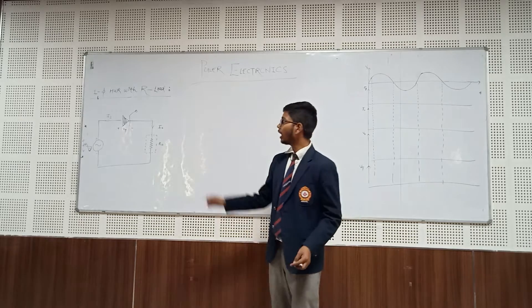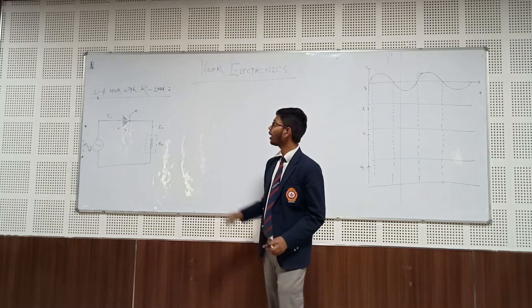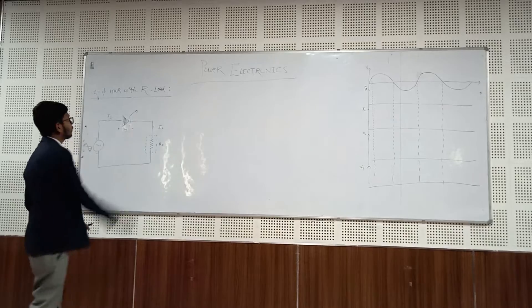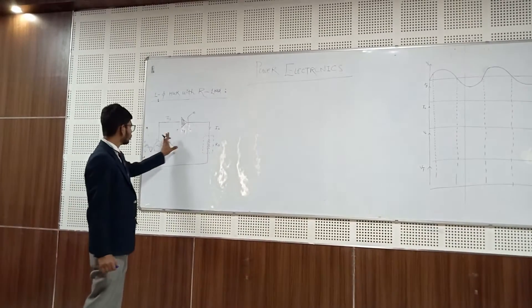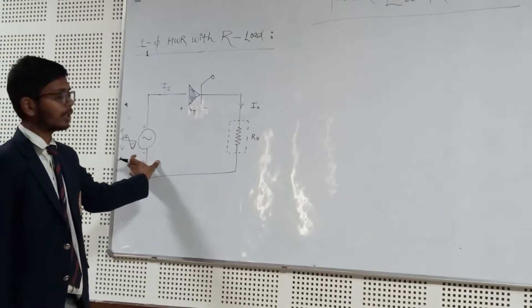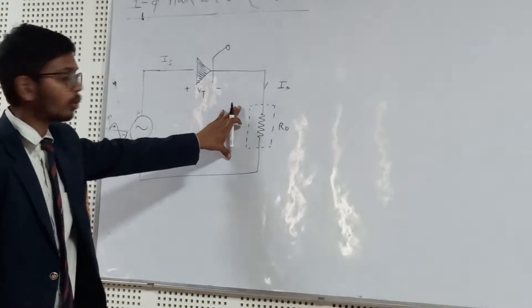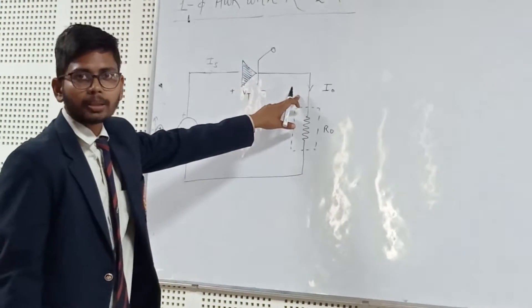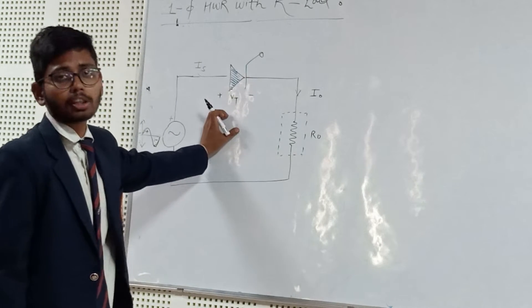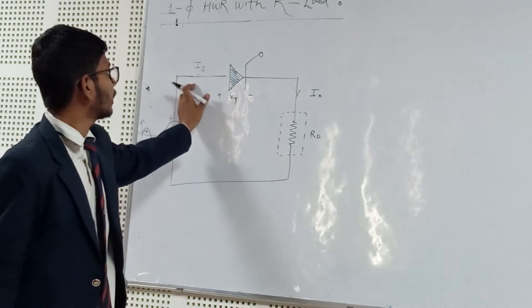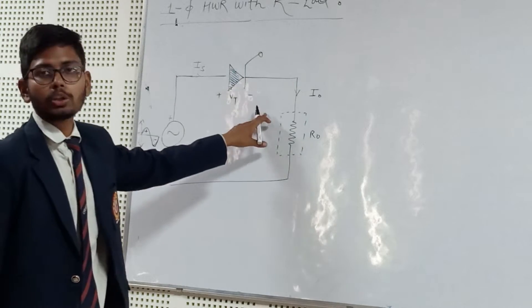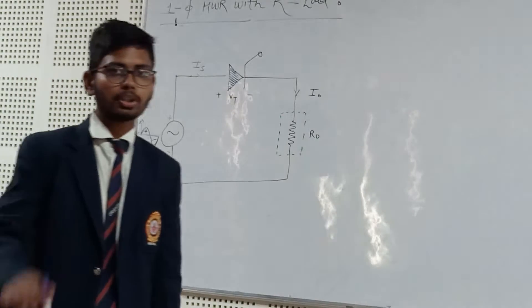Today I will apply this concept to my first single-phase half-wave rectifier with R-load. As you can see in this circuit, there is an AC source, there is a load R-not, which carries load current I-not. VT is the thyristor cross voltage across the SCR. The source current is equal to the load current — that is our assumption.